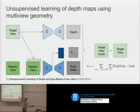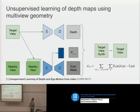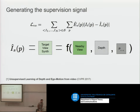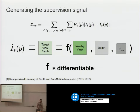The loss equation means: this is the target view and this is the synthesized one — it's just the error between both. The explainability mask handles occlusions: if I have a neighbor frame, maybe I see an object in one and not in the other, so it's impossible to synthesize something not visible in the other. Or maybe there is something moving non-rigidly, so I cannot predict that object either. The synthesized view is a function of the nearby view, the predicted depth, and the relative pose. The good news is that f is differentiable using multi-view geometry, so we can backpropagate the errors.